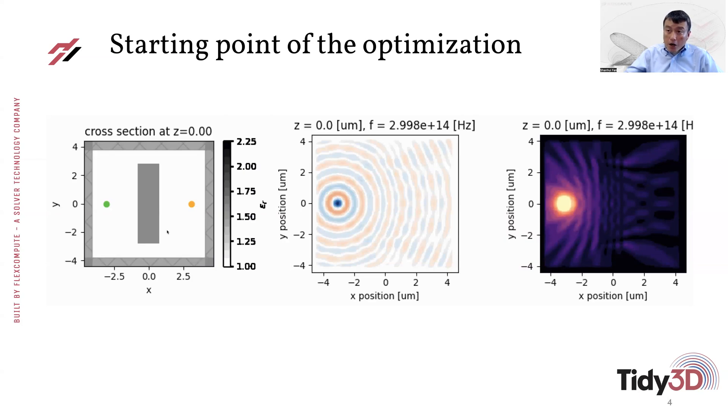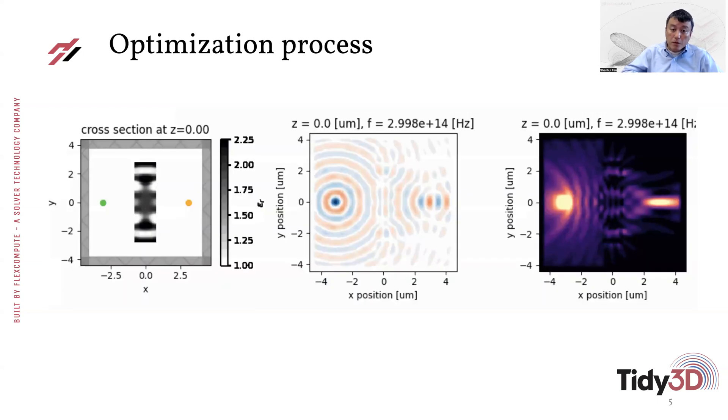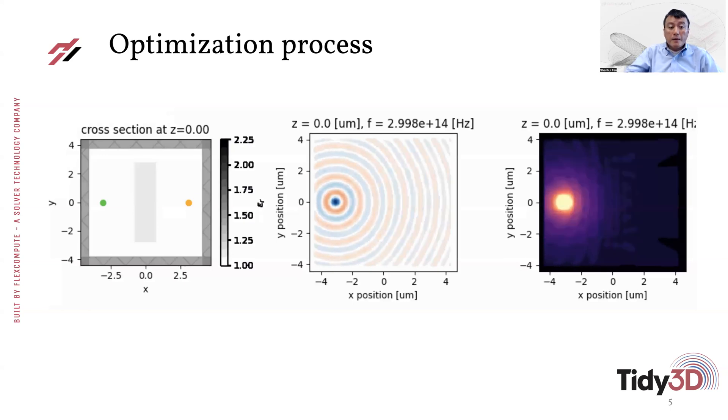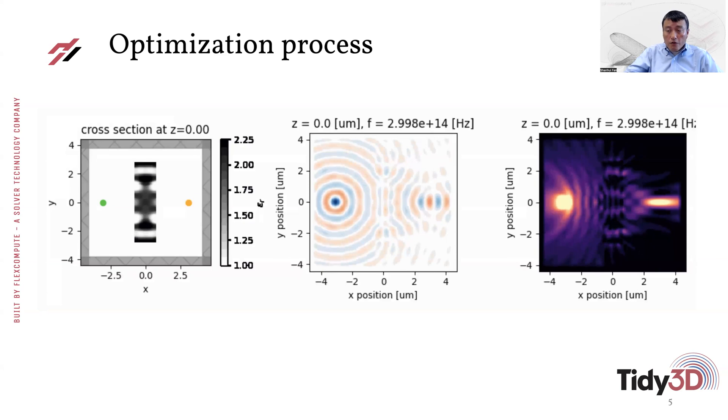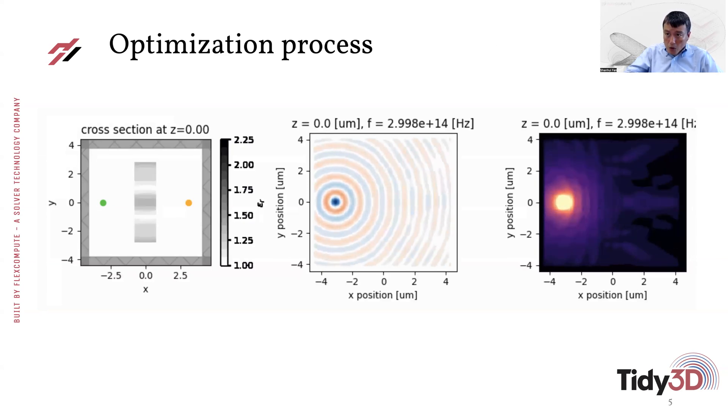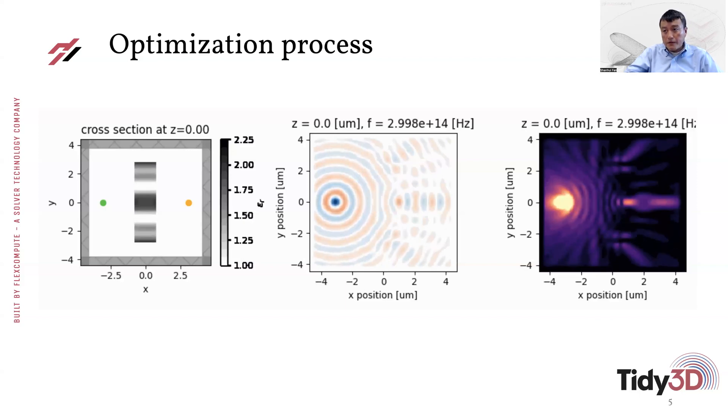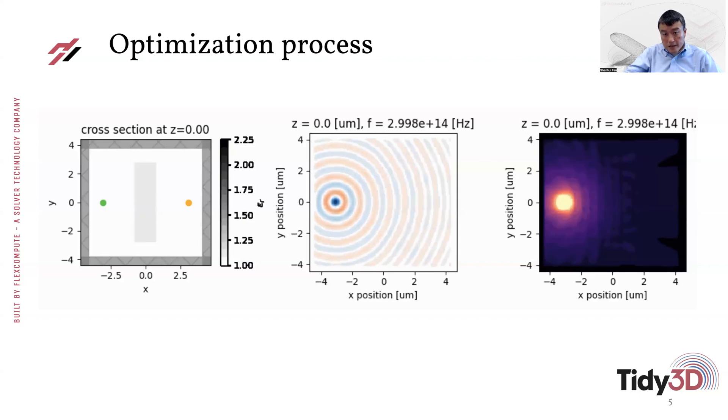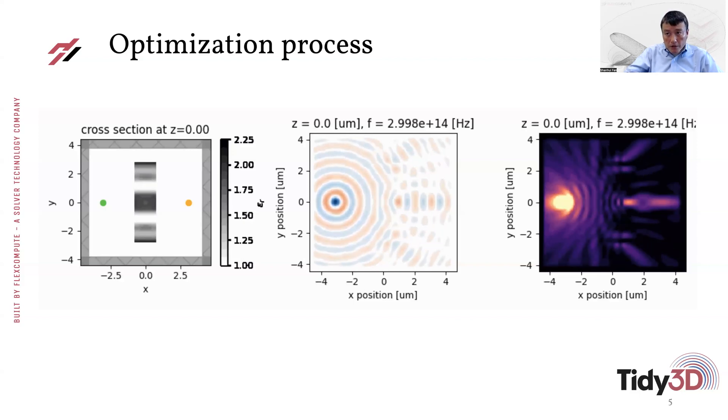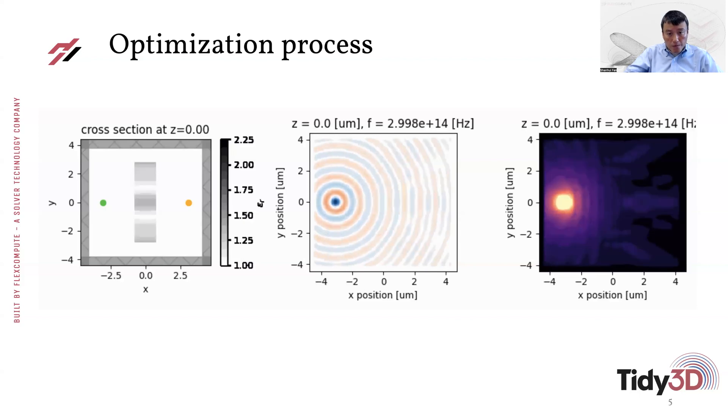So starting from this, what we would do is to adjust the permittivity inside the region as indicated by the rectangle here. And here is the optimization process shown in a movie played repeatedly. So in this movie, what we show here on the left is the permittivity distribution for each iteration step. In the middle is the field distribution corresponding to each of the permittivity distributions. And on the right is the intensity distribution.